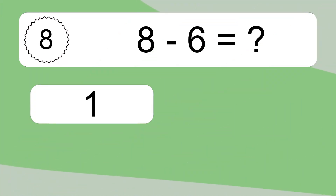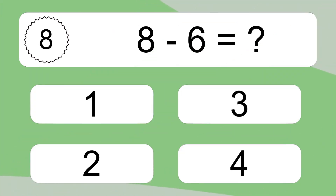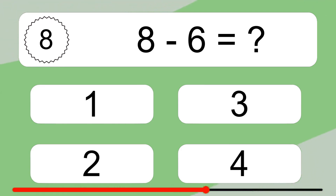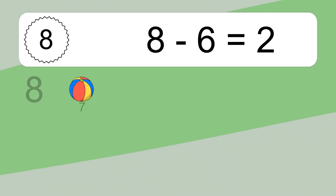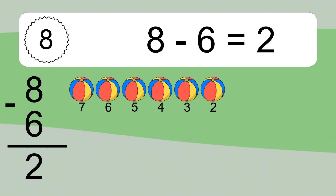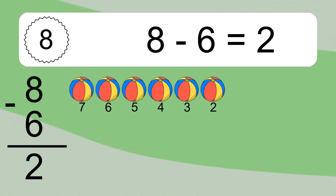8 minus 6 equals what? 8 minus 6 equals 2. Let's count it: 7, 6, 5, 4, 3, 2.